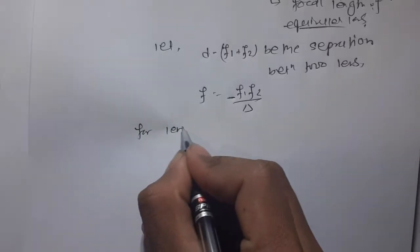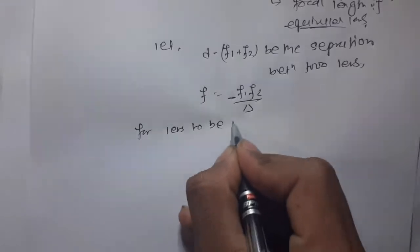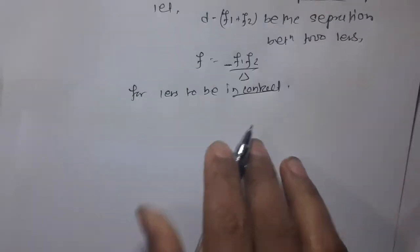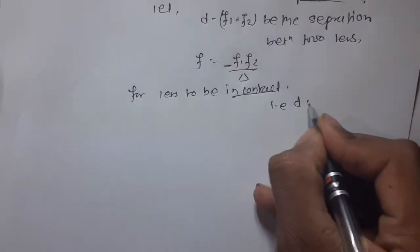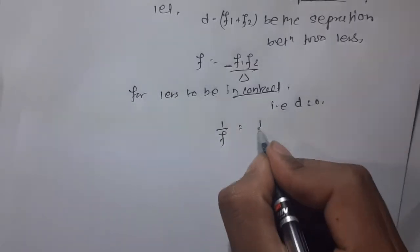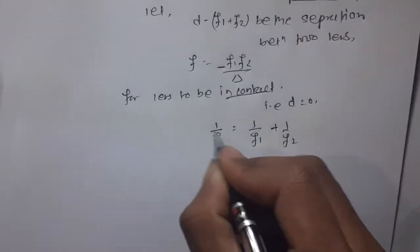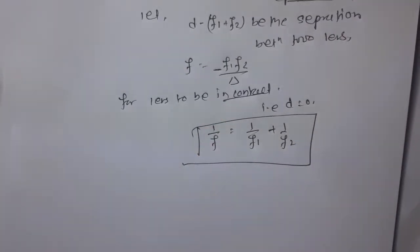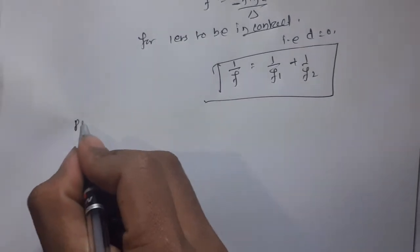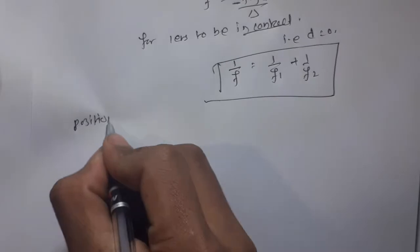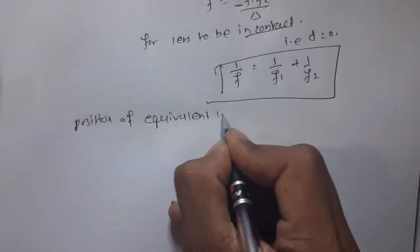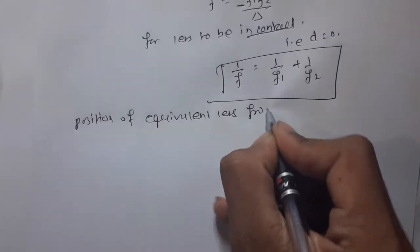For two lenses in contact, that is d = 0, the focal length simplifies to 1/f = 1/f1 + 1/f2.